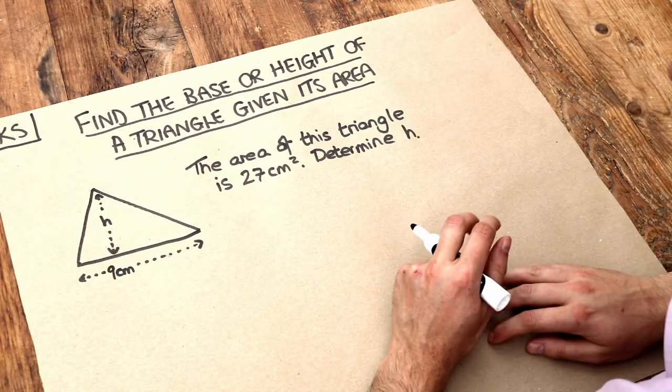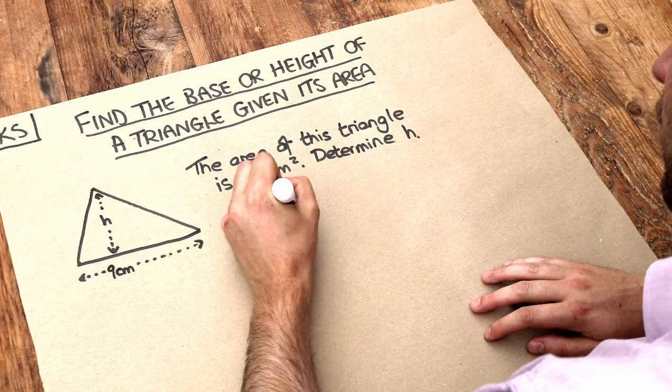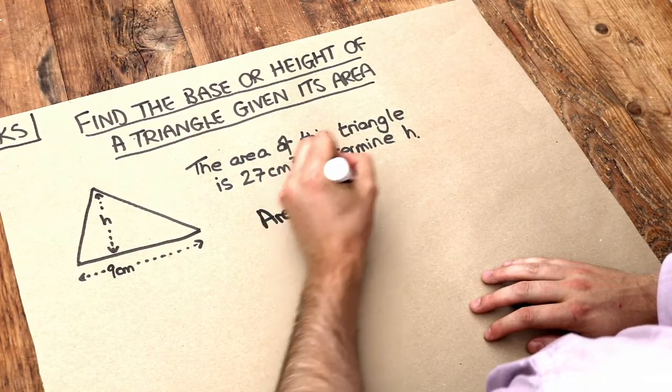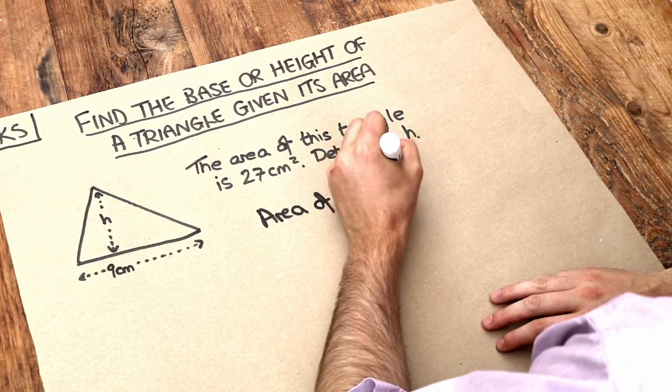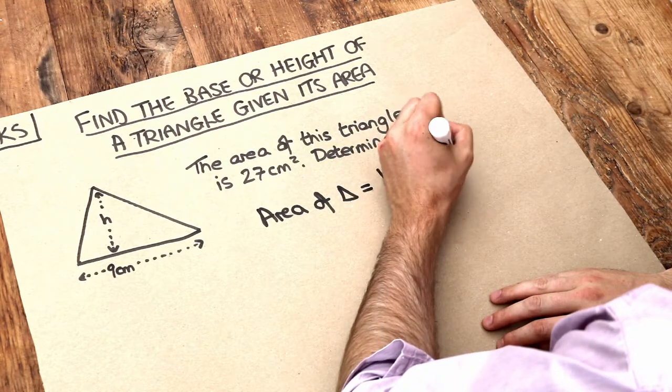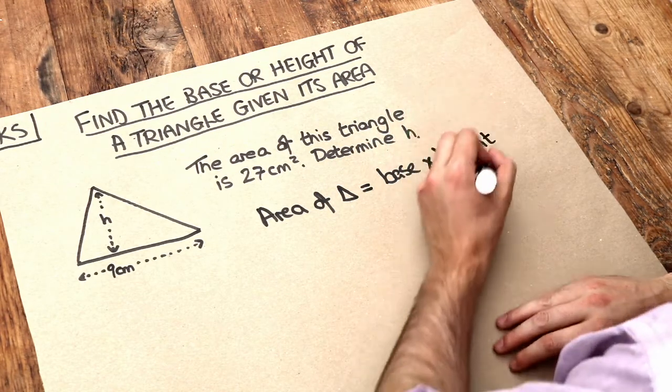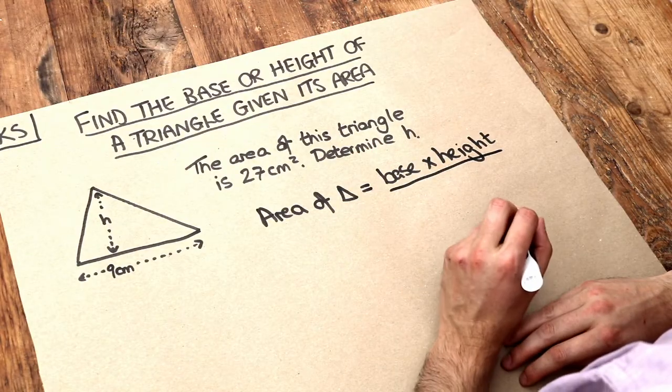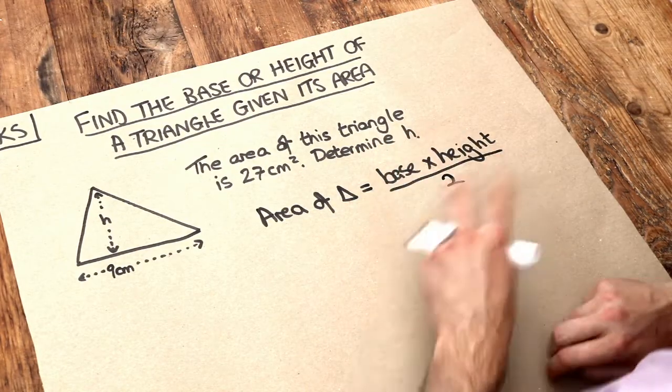So let's remind ourselves of the area of a triangle formula. The area of a triangle is equal to the base times the perpendicular height, so the height has to be at right angles to the base, and we divide it by 2.